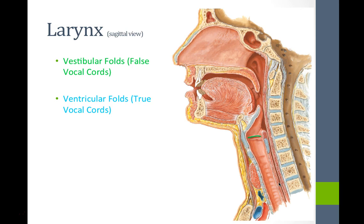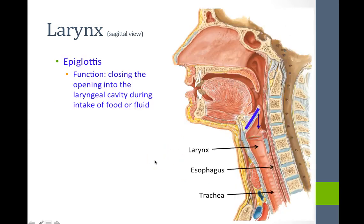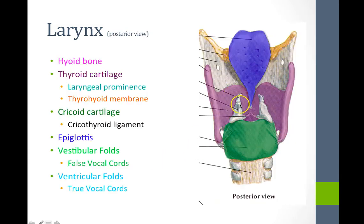The vestibular folds, also known as false vocal cords, do not assist in vocalization. The true vocal cords are inferior to them and are also called ventricular folds — remember 'TR' in ventricular for 'true.' F comes before T, so the false cords are superior. In a superior view looking down the throat, you would see the epiglottis along with arytenoid and corniculate cartilages on each side, all covered with mucosa.